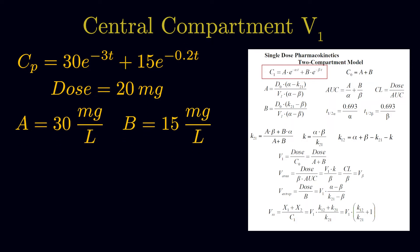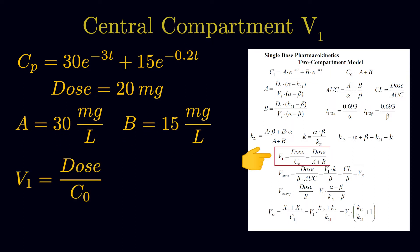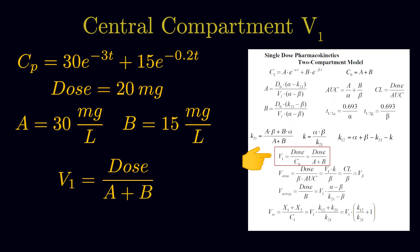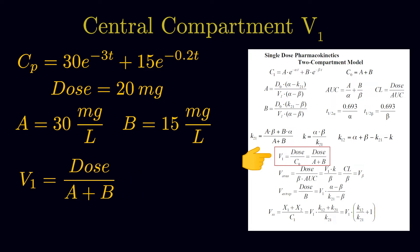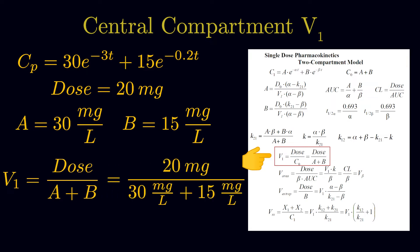When solving for our volume of distribution, since V is equal to dose over C0 and C0 is equal to A plus B, we can substitute that into our equation. So V is equal to the dose of 20 mg divided by A plus B, or 30 plus 15, and we get 0.44 liters.